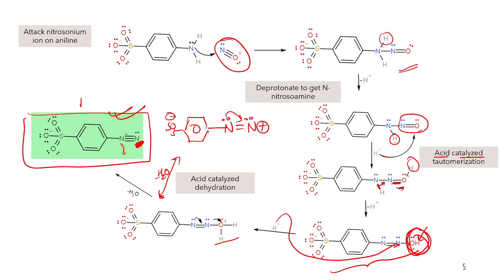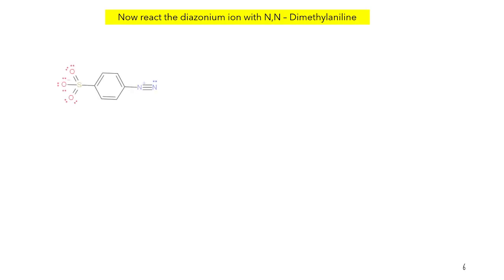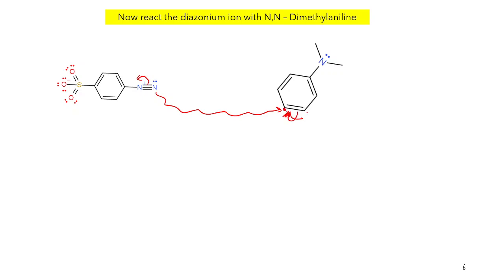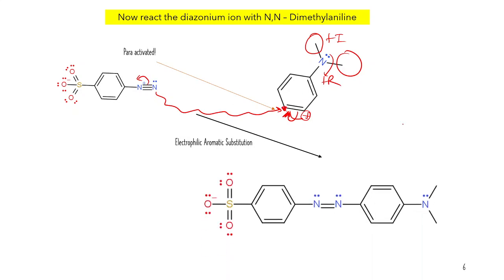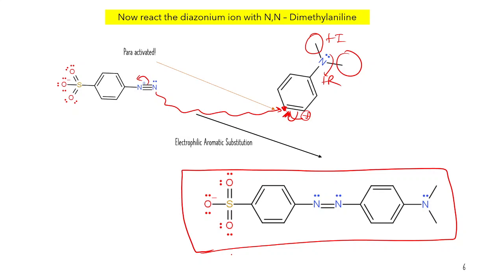Now you react the diazonium ion with N,N-dimethylaniline. The delta-positive on the terminal nitrogen attacks the pi system at the para carbon of N,N-dimethylaniline, giving a positive charge at that carbon - this is electrophilic aromatic substitution. The para position is highly activated in N,N-dimethylaniline due to +I groups from the methyl groups and +R from the nitrogen lone pair, so para is highly preferred and you join the diazonium group there.